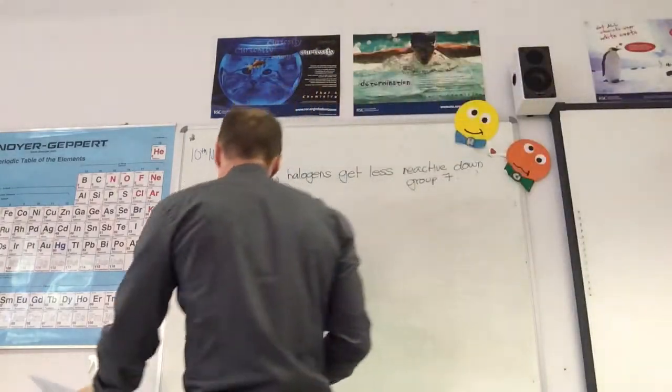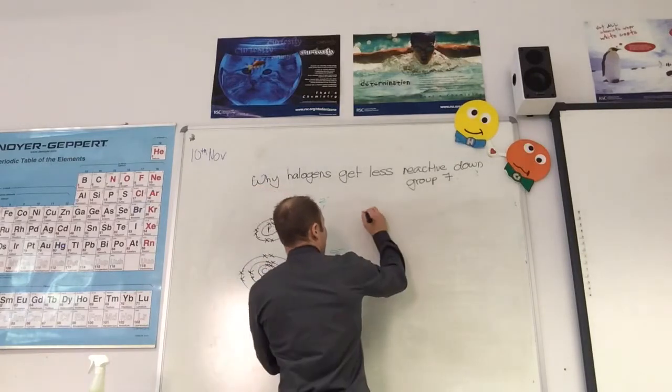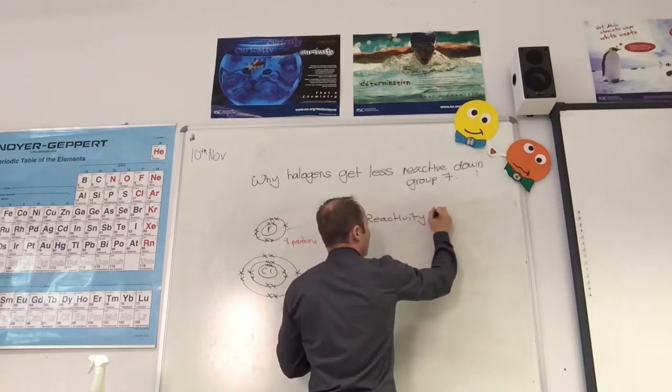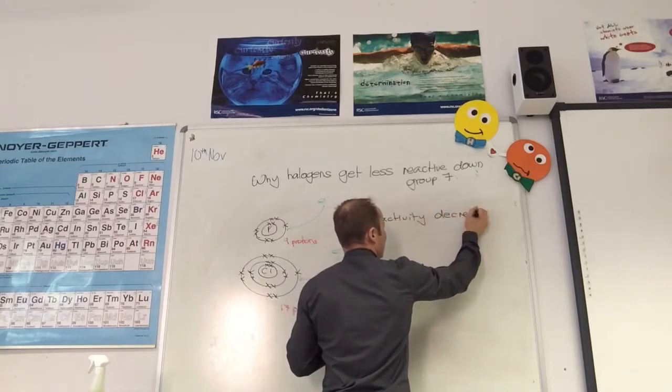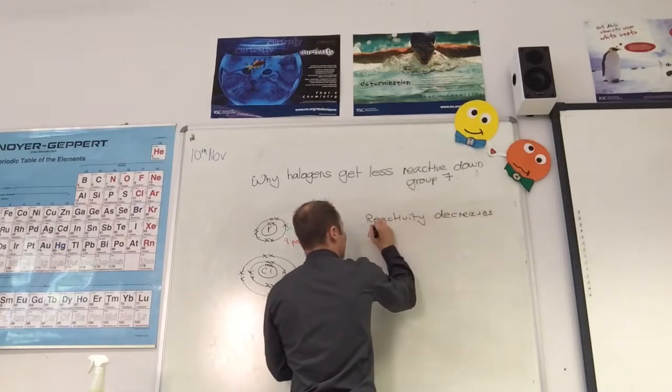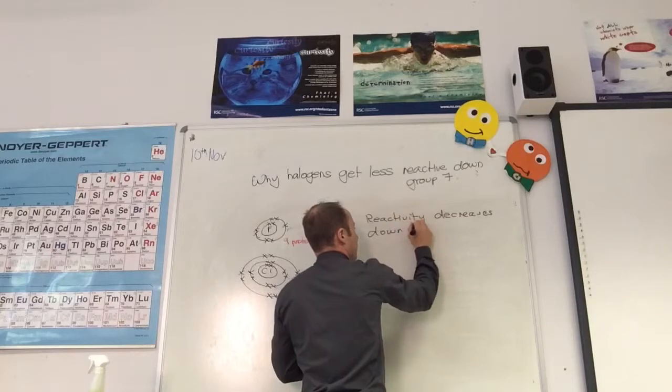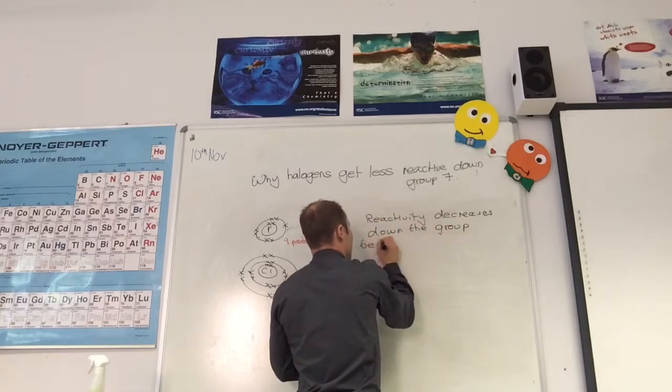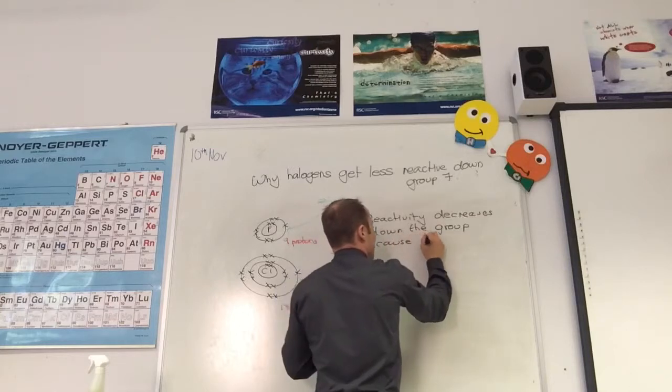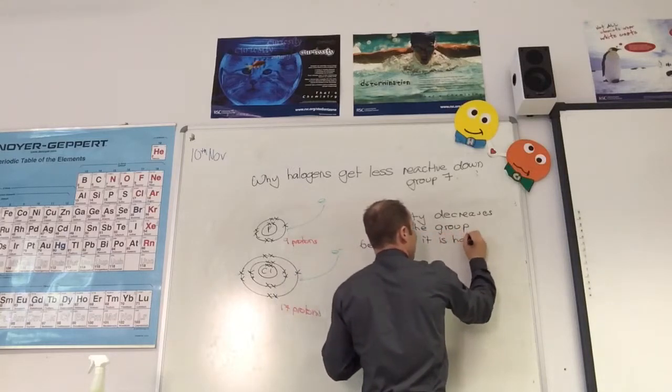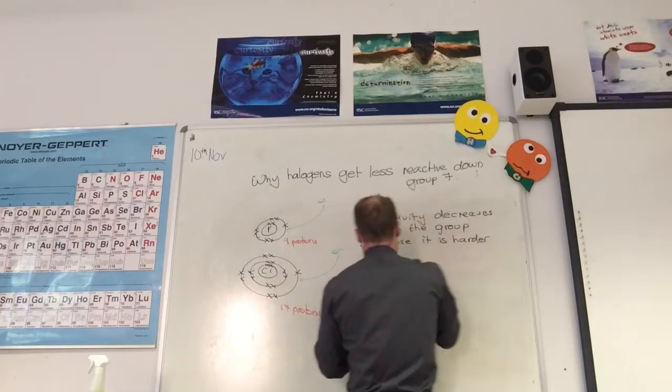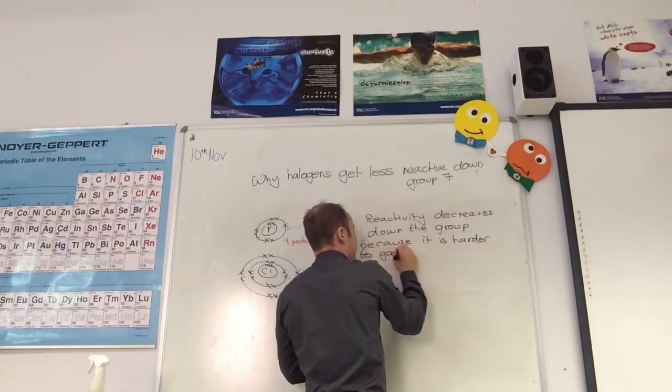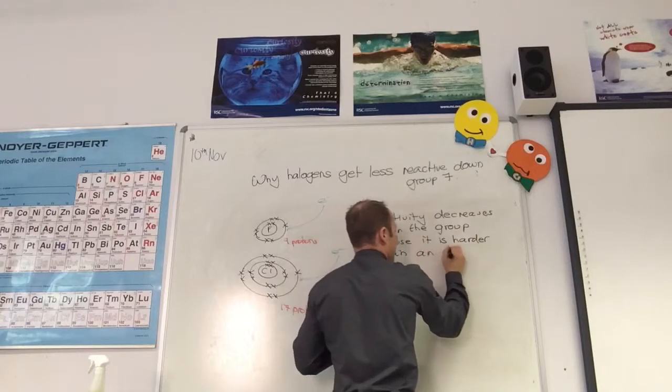We'll say reactivity decreases down the group. And again, this comes up a lot. Because it is harder to gain an electron.